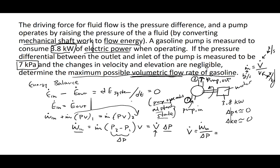The volumetric flow rate equals 3.8 kilowatts — which is kilojoules per second — divided by delta P of 7 kilopascals. Using the conversion that one kilopascal times meters cubed equals one kilojoule, the kilojoule and kilopascal units cancel, leaving meters cubed per second. This works out to 0.543 meters cubed per second, which is the maximum possible volumetric flow rate.